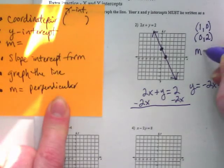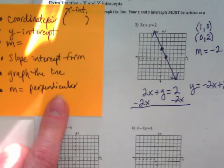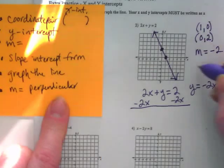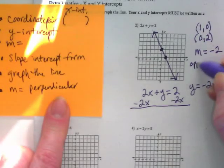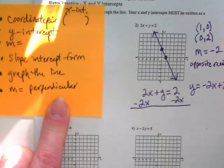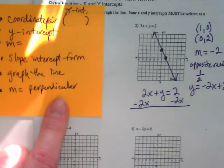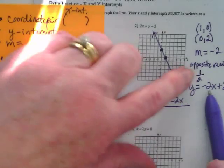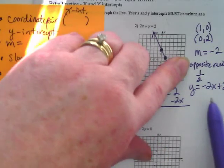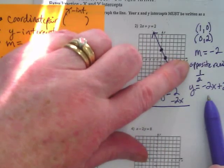My slope is negative two. What would the slope of my perpendicular line be? We're going to put opposite reciprocal of the m would be positive one half. This is negative, so it's going to be positive. This was two over an invisible one, so its reciprocal is one over two.